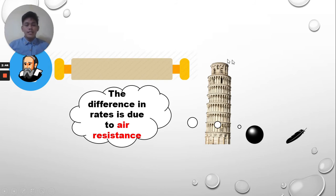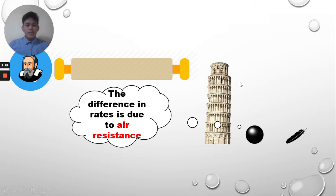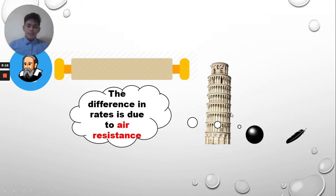Falling bodies theory also states that as an object moves downward, it gains speed. The faster the movement of an object, the greater the air resistance. Eventually, the air resistance is enough to balance gravity. That is the reason why the cannonball reaches the ground first before the feather — not because of the weight of the two objects, but because of the air resistance.